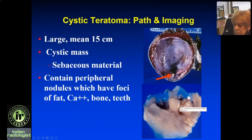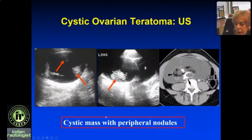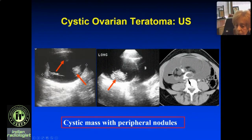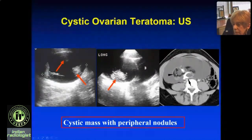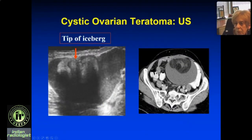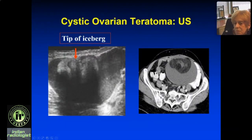The teratoma looks like a hypoechoic/anechoic mass but it has peripheral nodules. If you see a girl with a pelvic mass — and sometimes these are big enough to be abdominal masses — always think about ovarian origin and look for both ovaries. If you see only one, think about an ovarian mass. In children they're large enough to go up into the abdomen, and the teratoma has those peripheral nodules. We do CT for correlation — you can see the fat and calcification. Another appearance is the 'tip of the iceberg' sign with echogenic material anteriorly, usually fat or hair.